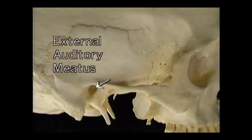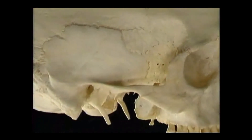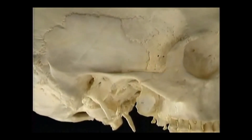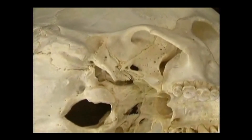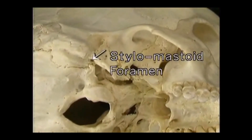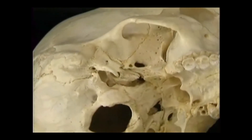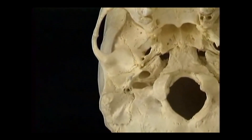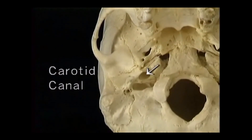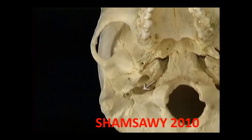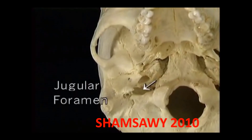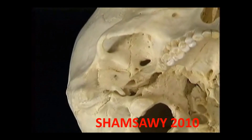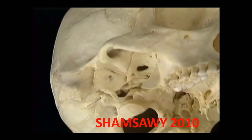This is the external auditory meatus, leading to the middle ear. This long sharp projection is the styloid process. Just at the base of the styloid is the little stylomastoid foramen, for the facial nerve. Medial to the styloid process are two major openings for blood vessels: the carotid canal, passing forwards for the internal carotid artery, and the jugular foramen, passing backwards for the internal jugular vein. Just above the occipital condyle is the hypoglossal canal for the hypoglossal nerve.